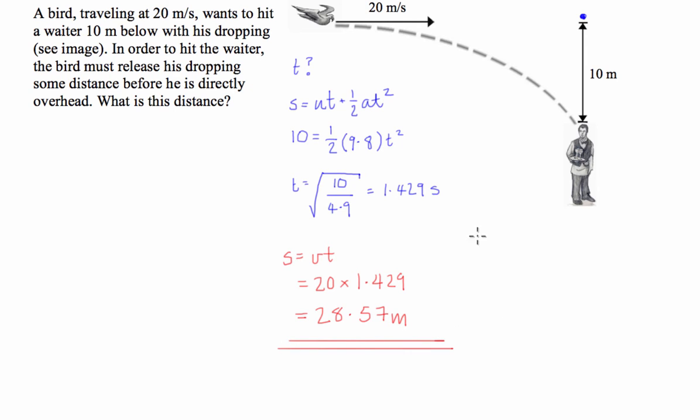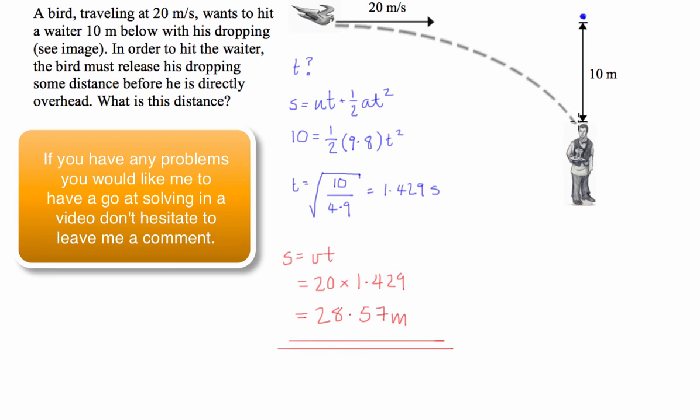So you can see that this problem is not very difficult, because all we had to do was figure out the time taken for the dropping to fall through the 10 metres. So all we have to remember is that with projectile motion with no wind resistance or air resistance, we have a constant velocity in the horizontal direction, and we have a constant acceleration in the vertical direction.